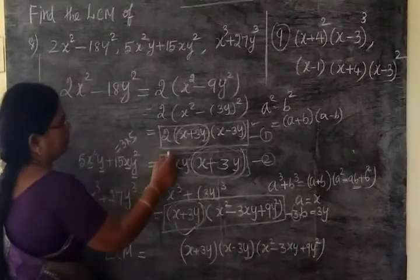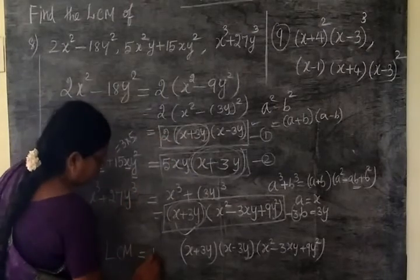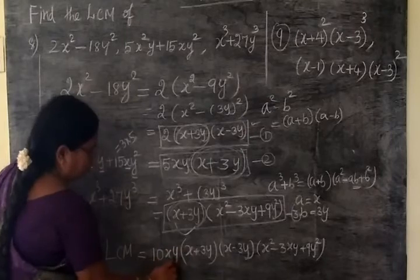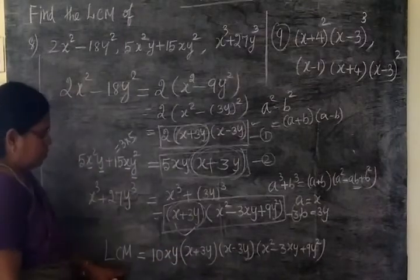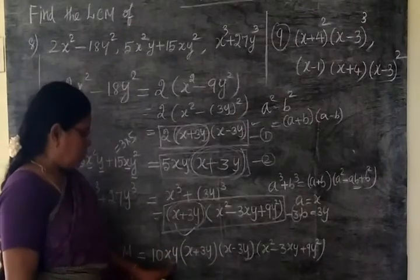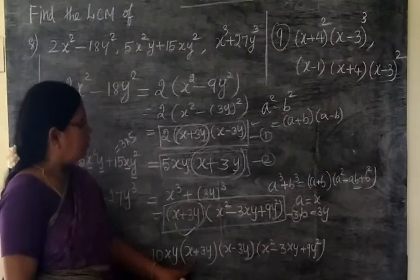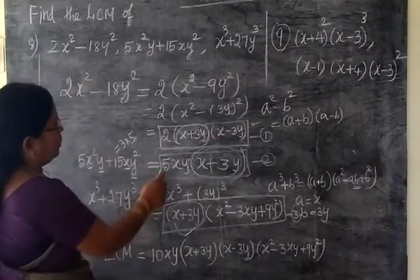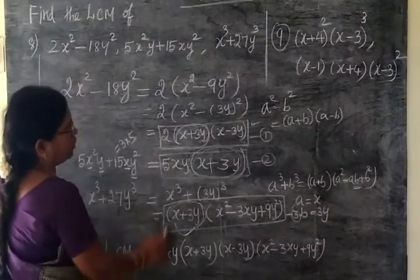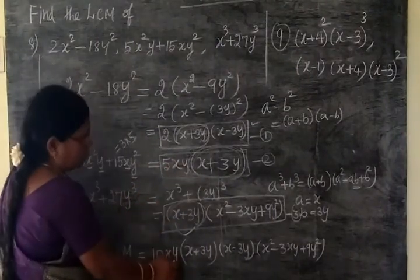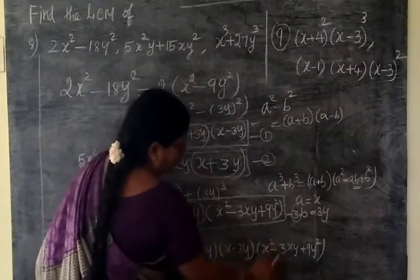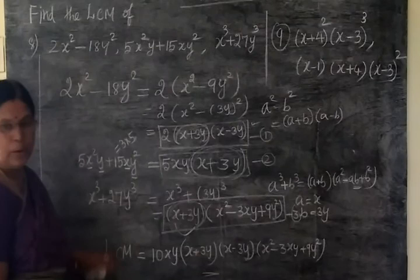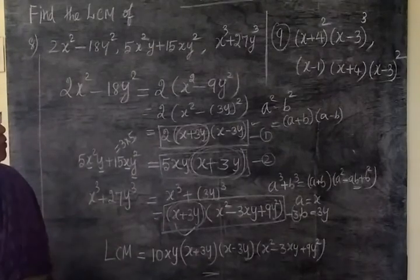In the side, you can write 5, you can write 2, so 10, then x, y. So answer is LCM equal to 10xy(x + 3y)(x - 3y)(x² - 3xy + 9y²). This is the summa question, very important question for this one.